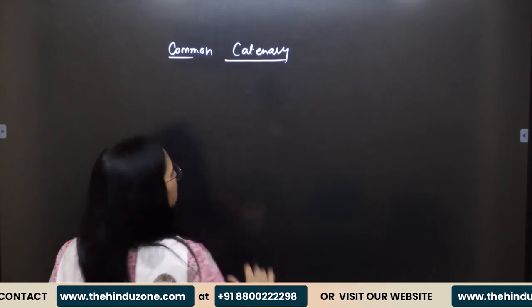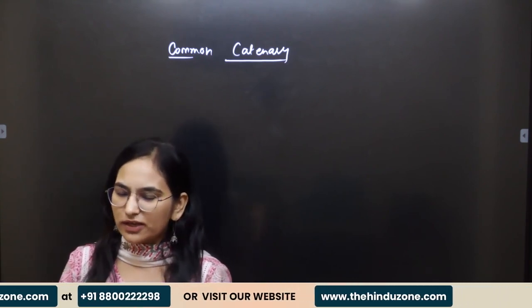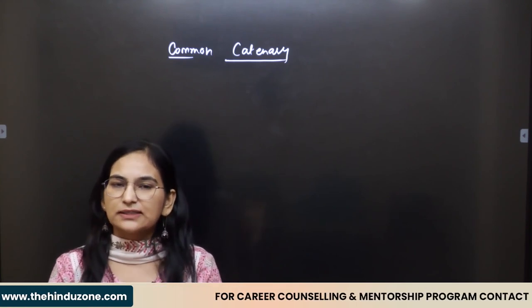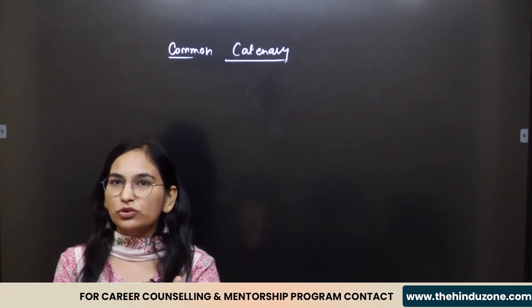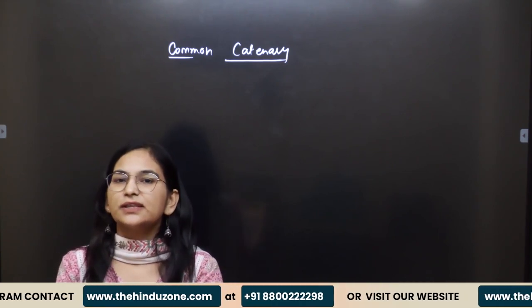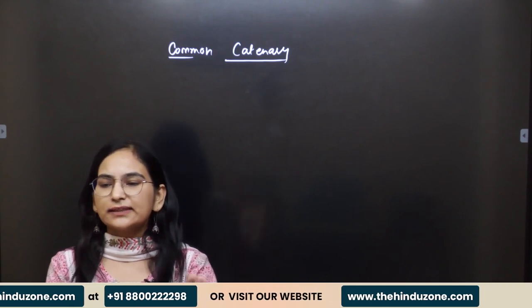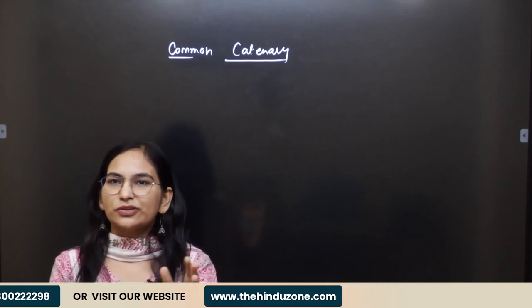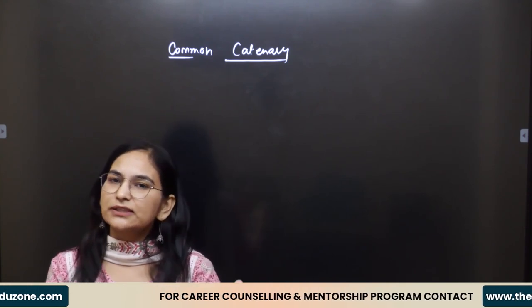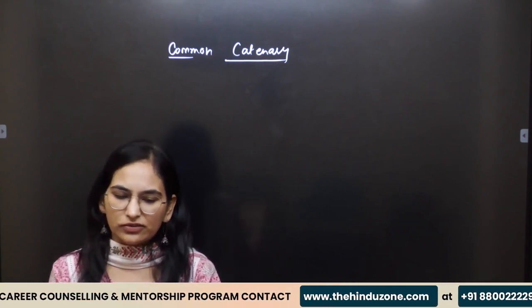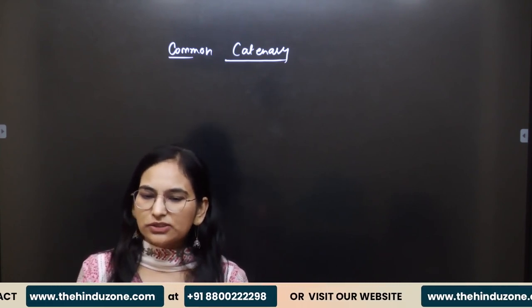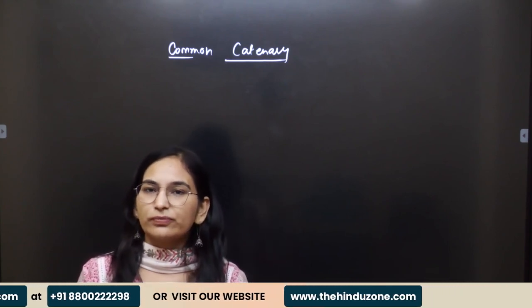This is a small topic — you can cover it in one lecture. The basics involved are: you should know the intrinsic equation of the catenary, the cartesian equation of the catenary, and then five to six relations between different terms. If you know those relations, you can deal with any question on the common catenary.